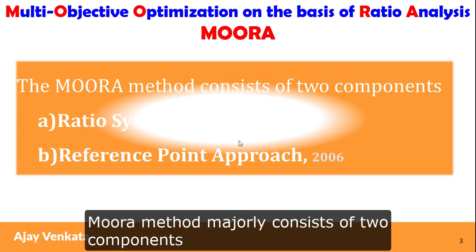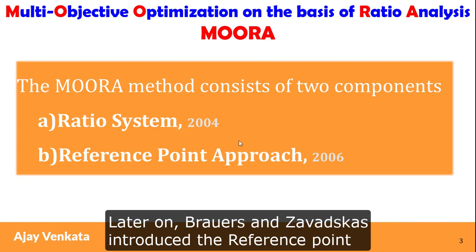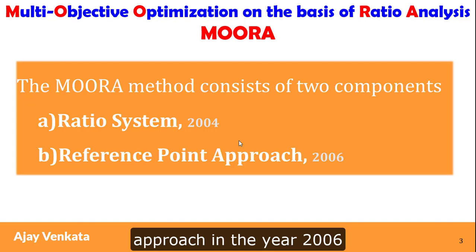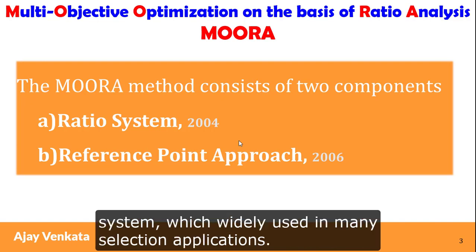MOORA method majorly consists of two components. One is the ratio system, which was introduced in 2004. Later on, Barrows and Javdaskars introduced the reference point approach in the year 2006. Here in this video, it is all about the ratio system, which is widely used in many selection applications.